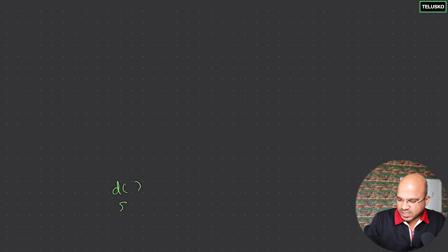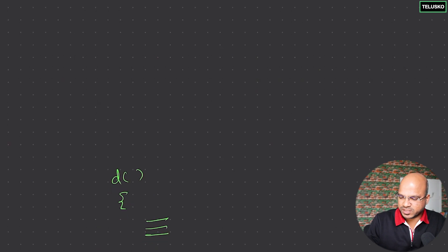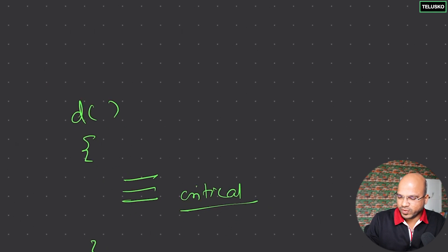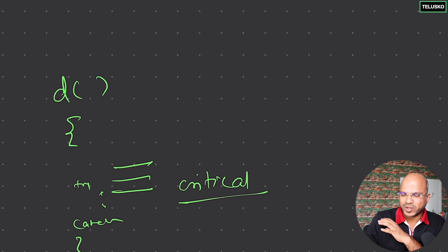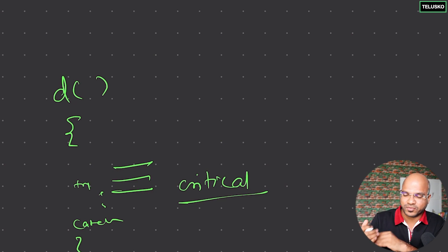Before we understand `throws`, let's talk about a scenario. Say you are writing a method called `d`. In this method you write certain statements, and one of them is critical. Whenever you have a critical statement, it is always better to write try-catch. So we have a try and a catch block for that critical statement inside method `d`.